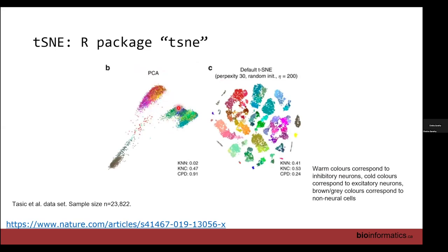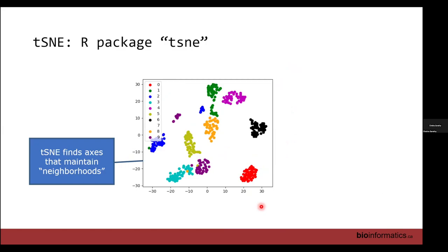With PCA, the data was not well-separated — inhibitory neurons is a broad term with many subcategories. But with t-SNE, you get very pretty colorful plots where each color corresponds to a specific neuronal cell type. That's why t-SNE is very popular in single-cell data analysis pipelines. In R, it's a simple function called tsne from the tsne package. One parameter to keep in mind is perplexity, which balances neighborhood versus global structure.